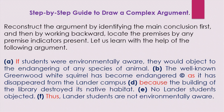Now let's try to understand the process of diagramming with the help of this argument. There are six propositions, numbered A to F. The words marked in red are important. A: If the students were environmentally aware, they would object to the endangering of any species of animals. B: The well-known Greenwood white squirrel has become endangered. C: As it has disappeared from the Lander campus because the building of the library destroyed its native habitat. E: No Lander students objected. F: Thus, the Lander students are not environmentally aware.